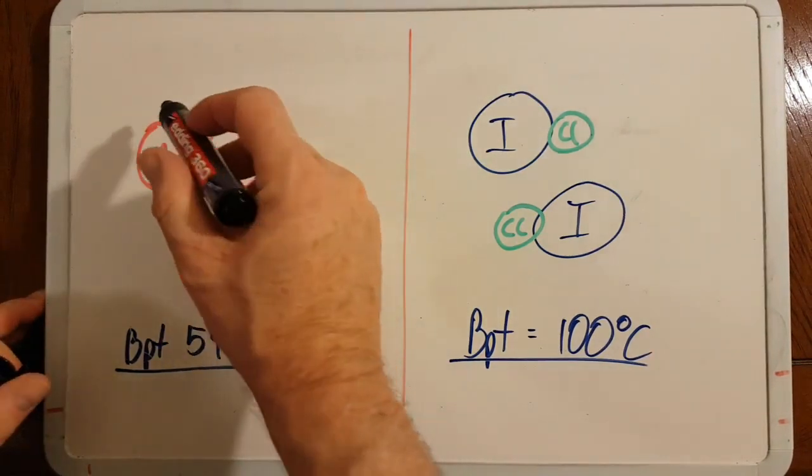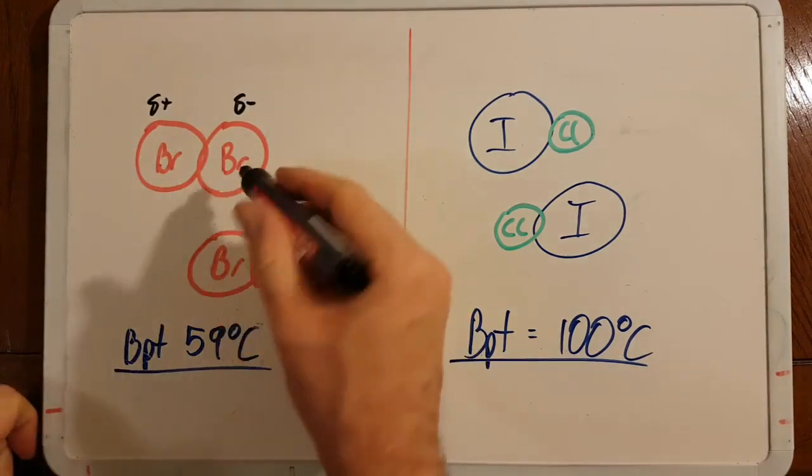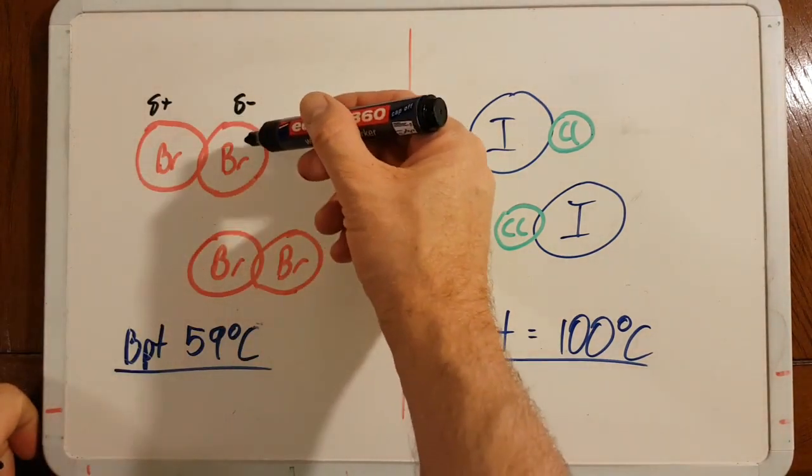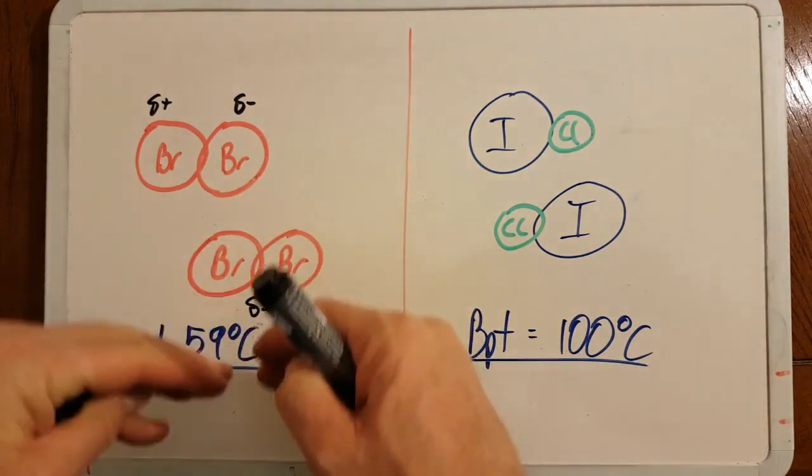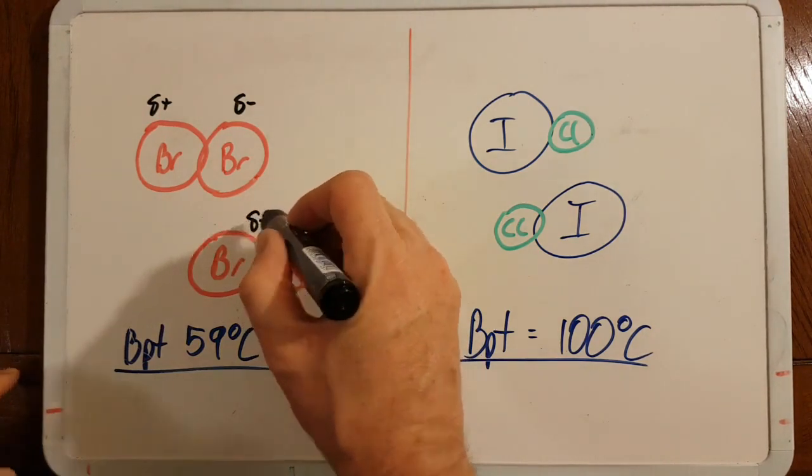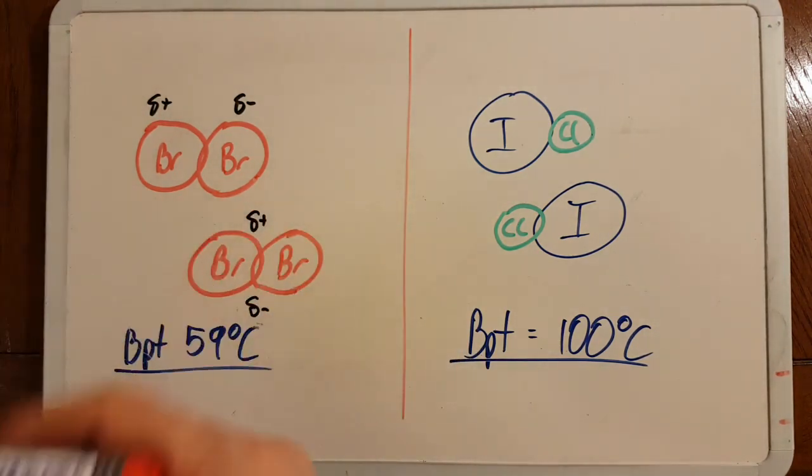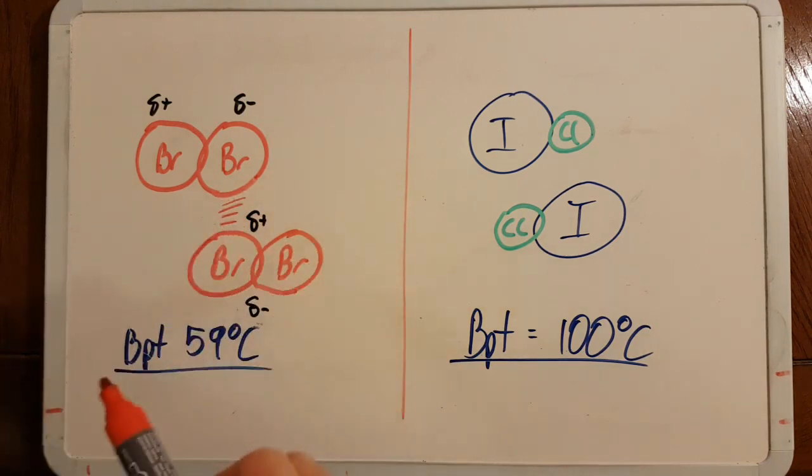Maybe in one fraction of a second there'll be slightly more electrons on the right-hand one than on the left-hand one. The electrons in this bromine are going to repel the electrons in the other bromine, making them move down through electrostatic repulsion, leaving a slightly positive charge at the top. This is the so-called London dispersion force.